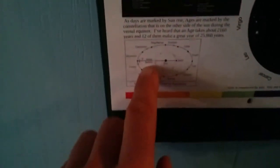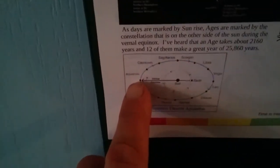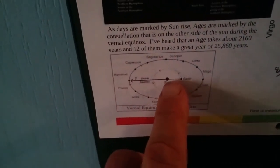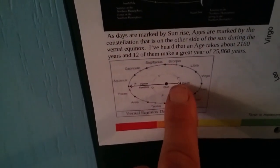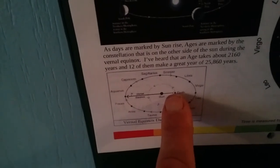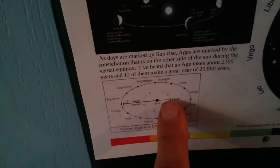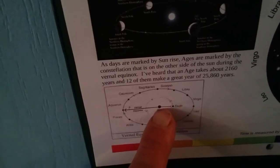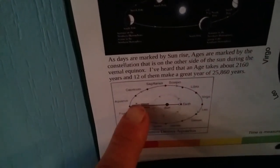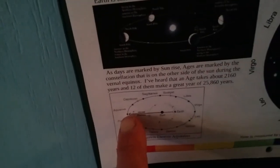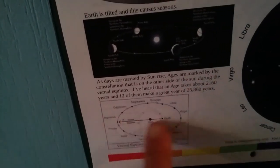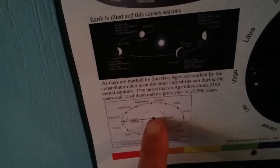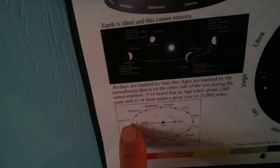And then it talks about the procession of the equinox when the vernal equinox happens and we measure what constellation is directly behind the Sun. From the Earth, the Sun, and the constellation behind the Sun.